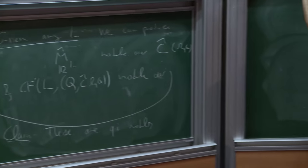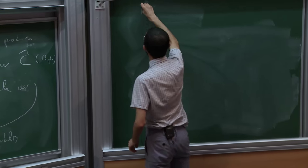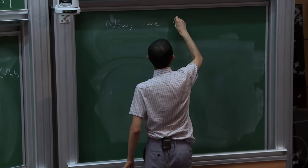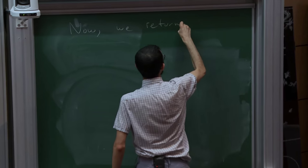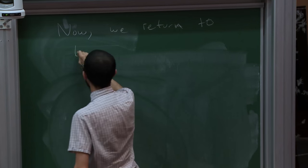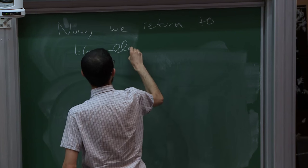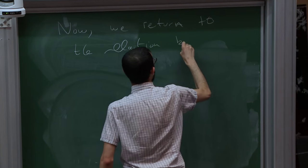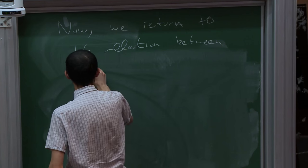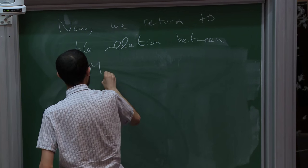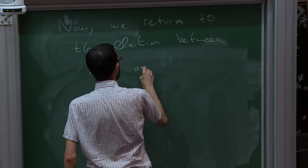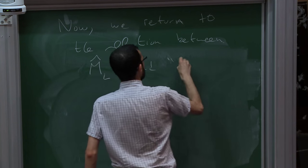So now we switch gears. We return to these intermediate completions — to the relation between these kind of modules M̂_L and flux.